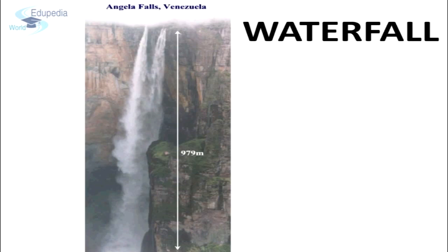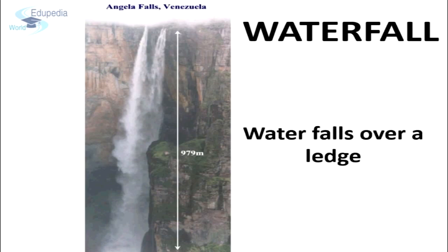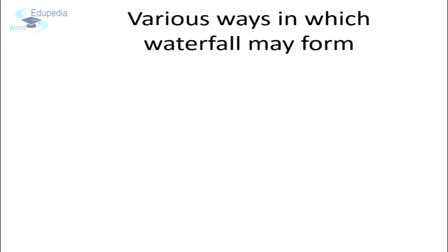Another famous landform created by a river in its upper course is the waterfall. A waterfall is formed when water falls over a ledge on the ground. Their great force usually wears out a plunge pool. Waterfalls are formed in various ways.